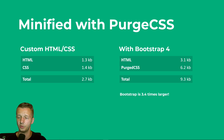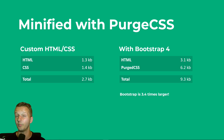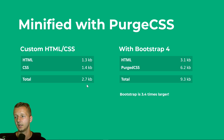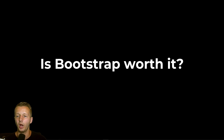While 3.4 times is a massive improvement over 58 times, it's still a significant difference — especially in the context of a real project with multiple pages, more HTML, more CSS, and more needs. For example, if your custom HTML/CSS totals 50 kilobytes, Bootstrap 4 might end up being 150 kilobytes even while using PurgeCSS. So that begs the question: is Bootstrap worth it?